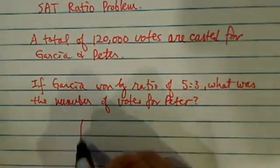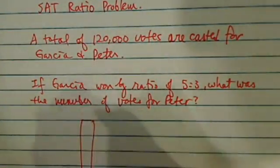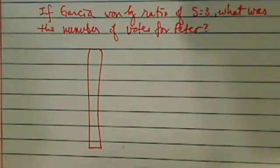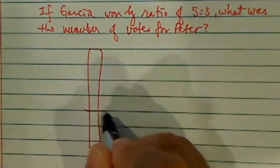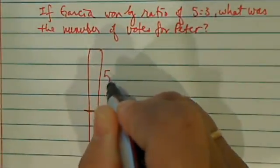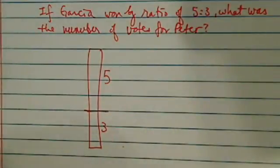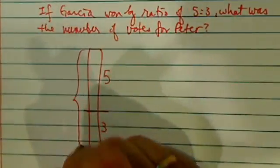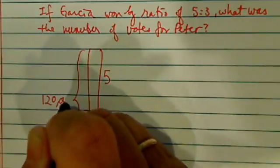Well, the best way to solve those ratio problems is what we call using the bucket method. So since the ratio is 5 to 3, we'll put a ratio on this side, and the total number of votes we'll put on this side is 120,000.